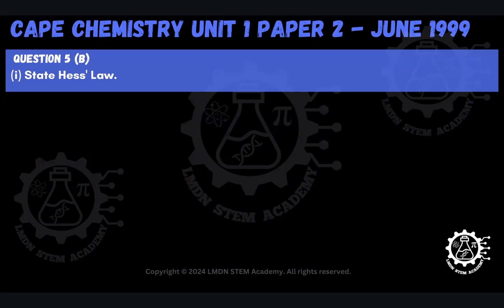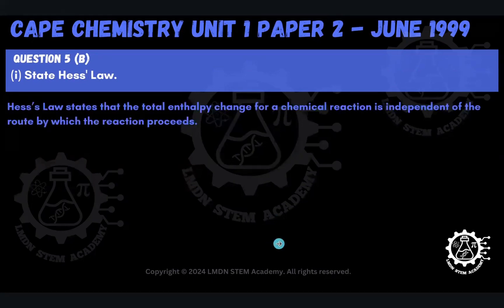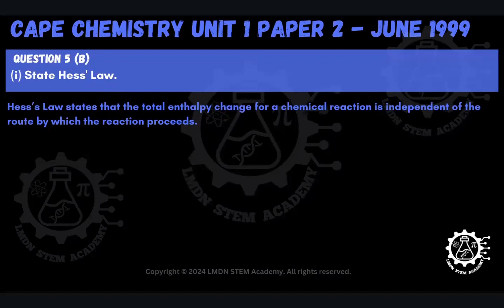The first part reads: state Hess's Law. Hess's Law states that the total enthalpy change for a chemical reaction is independent of the route by which the reaction proceeds. This law forms the basis of us being able to do calculations that involve enthalpy cycles, so we have to be sure that we remember the statement of this law.